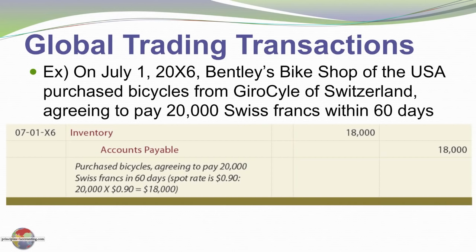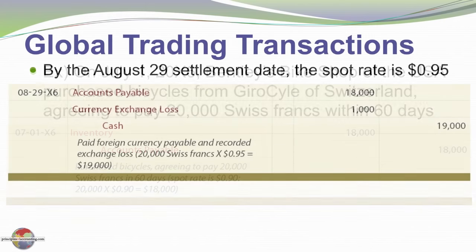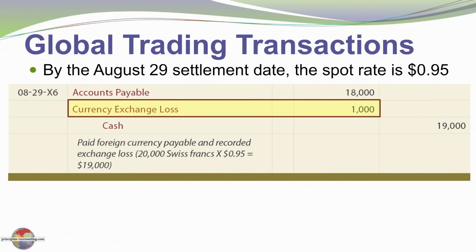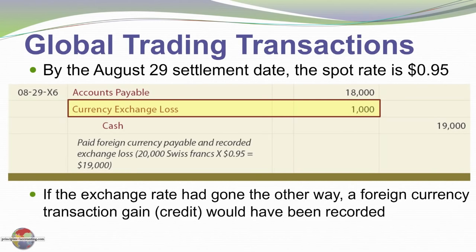The question that arises is what happens if exchange rates change and we have to pay more or less than $18,000 to buy the 20,000 Swiss francs 60 days from now when we settle. Assuming by August 29th, the settlement date, the spot rate has risen to 95 cents, we go to the bank to buy 20,000 Swiss francs and it costs $19,000. We credit cash $19,000 to satisfy an accounts payable on the books at only $18,000, so we debit accounts payable $18,000 and need a $1,000 debit to balance — recorded as a loss. We don't go back and change the recorded value for inventory; we view this as a currency exchange loss reported in the income statement. Of course, if the exchange rate had gone the other way, we could have had a foreign currency gain.